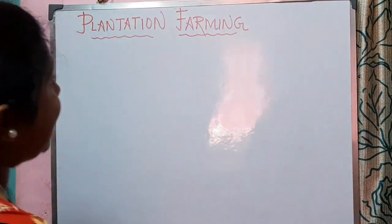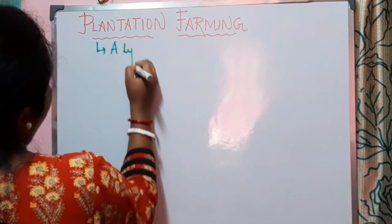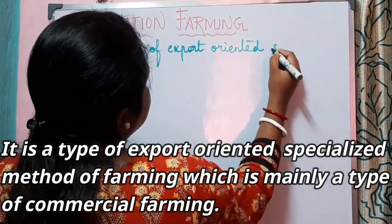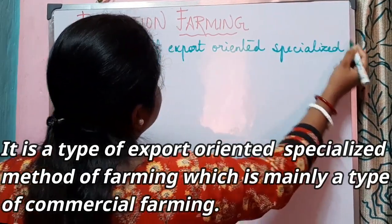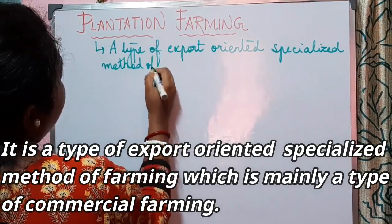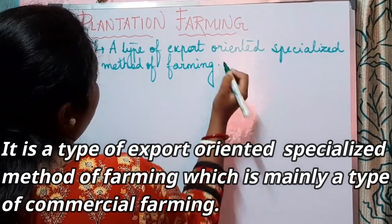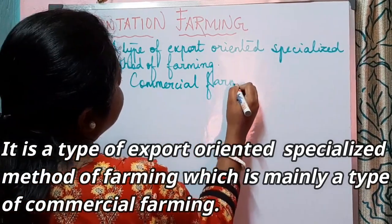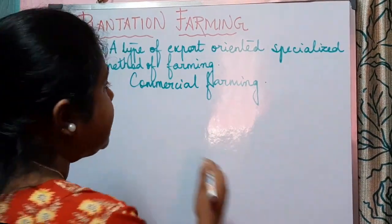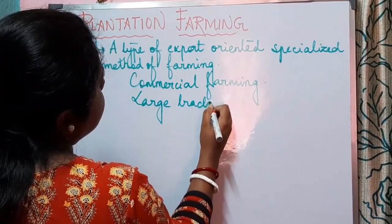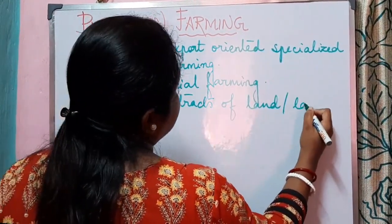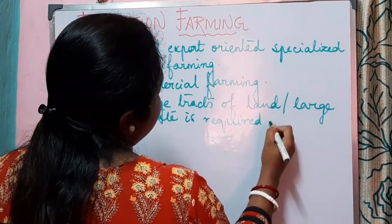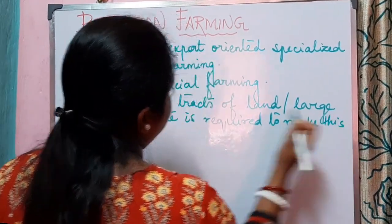What do you mean by plantation? Plantation farming is a type of export-oriented, specialized method of farming, which is mainly a type of commercial farming. In this type of farming, large tracts of land — or we can say a large estate — is required to make this type of farming successful.